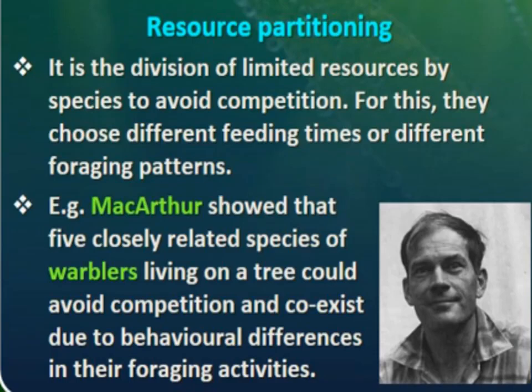Resource partitioning is the division of limited resources by species to avoid competition. For this, they choose different feeding times or different foraging patterns. MacArthur showed that five closely related species of warblers living on a tree could avoid competition and coexist due to behavioral differences in their foraging activities, as seen in the diagram.